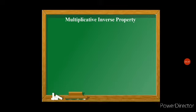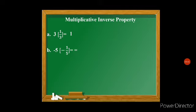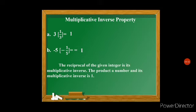The multiplicative inverse property: the inverse of a whole number is its reciprocal, where the numerator is 1. If we have 3, its inverse is 1/3. So 3 times 1/3 equals 3/3 equals 1. Similarly, negative 5 times negative 1/5 equals positive 1. The reciprocal of the given integer is its multiplicative inverse, and the product of a number and its multiplicative inverse is 1.